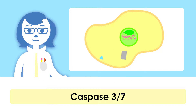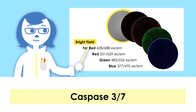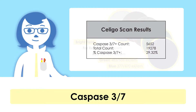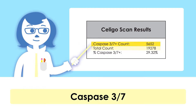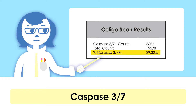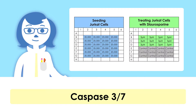Hoechst dye was added as a nuclear counterstain for the detection of total nucleated cells. After staining, the Celigo was used to acquire brightfield, caspase 3-7 green, and Hoechst blue images. The Celigo software automatically analyzes the captured images and reports the total number of green caspase-positive cells, the total number of blue Hoechst-positive nucleated cells, and the percent of apoptotic caspase 3-7 cells in the whole population. The captured brightfield images were not analyzed and were used to monitor cell morphology.